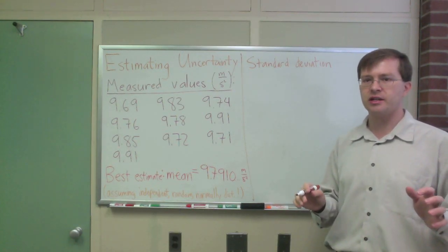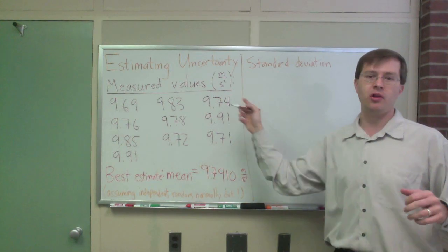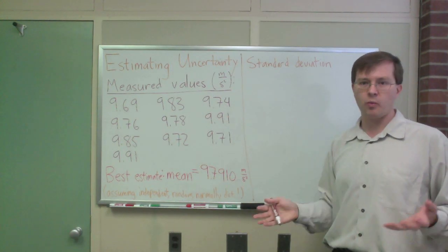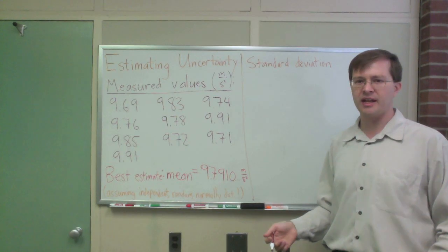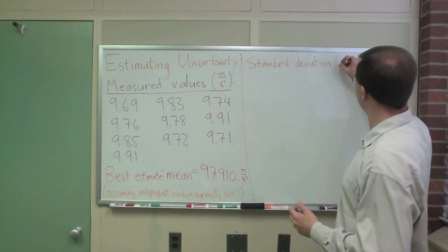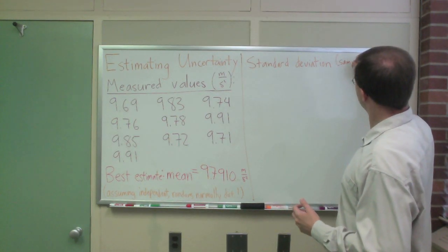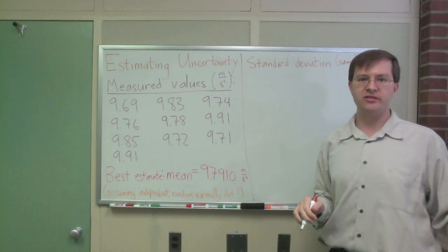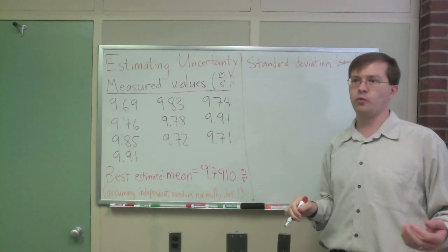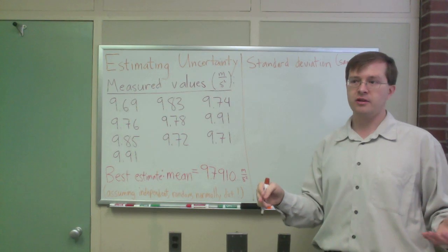This is when we're just taking a sample. We could take as many data points as we wanted to and get more and more data. So there's no sense that we're taking all the possible data. This is a sample standard deviation.